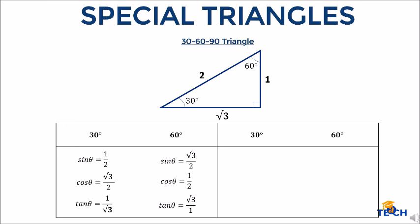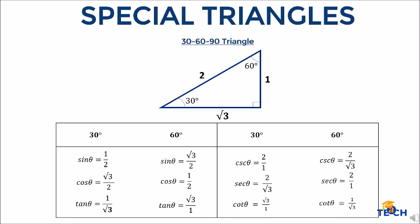For the reciprocal functions at 30 degrees: cosecant theta is 2 over 1. Secant theta is 2 over square root of 3. And cotangent theta is square root of 3 over 1.